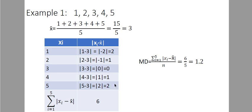The next thing to do is to add this column. We have 2 plus 1 plus 0 plus 1 plus 2, which is 6. Therefore, the mean deviation is 6 divided by 5 because we have 5 data points. So 6 divided by 5 is 1.2.